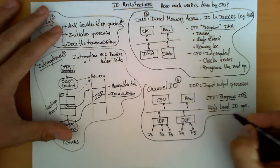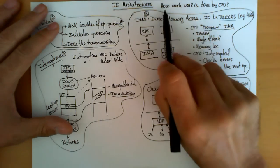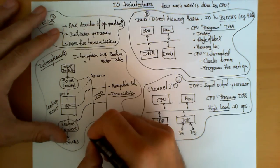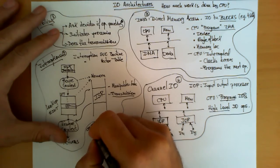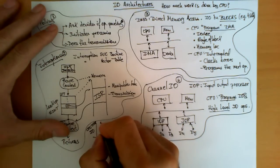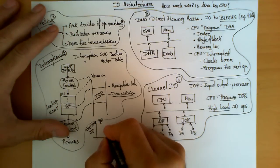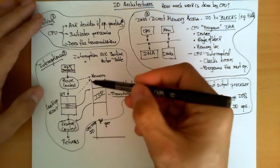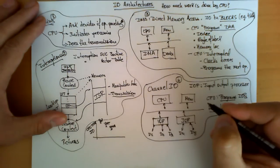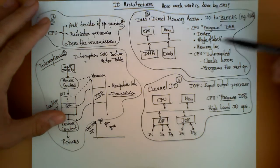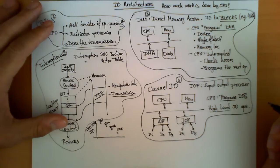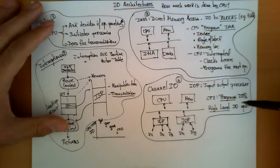These four strategies for input-output vary significantly in the amount of work performed by the CPU, and we can represent this with two graphs. Plotting CPU time devoted to input-output: polling is at the top because it requires the most CPU time; interruptions are slightly lower because the CPU doesn't have to poll devices; DMA reduces CPU time further by handling block transfers; and channel input-output is the lowest because the IOPs execute sophisticated, high-level input-output operations.